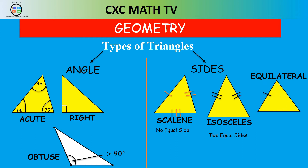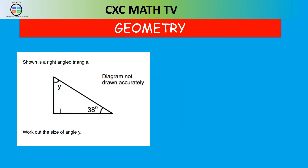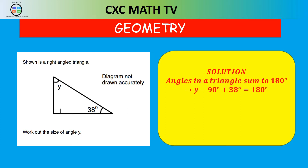Let's look at some questions to find missing angles in different types of triangle. Question one: shown is a right angle triangle — work out the size of angle W. We know that angles in a triangle sum to 180. So Y plus 90 degrees plus 38 equals 180. 90 plus 38 is 128, so Y plus 128 is 180. Subtracting 128 from 180 gives us 52. So Y is equal to 52 degrees.